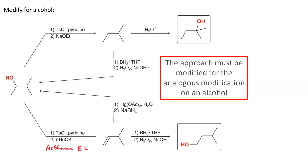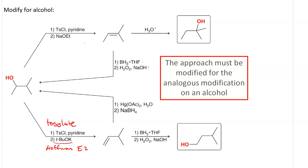To do the Hoffman elimination and end up with 3-methyl-1-butene, we first have to tosylate to replace the hydroxyl group with tosylate by reacting with tosyl chloride and pyridine. Then we use the bulky base, potassium tert-butoxide, and we get the Hoffman elimination to give 3-methyl-1-butene. Subjecting that to hydroboration with borane and THF, then oxidation with hydrogen peroxide and sodium hydroxide, gives us the less substituted alcohol — 3-methyl-1-butanol — via anti-Markovnikov hydration.